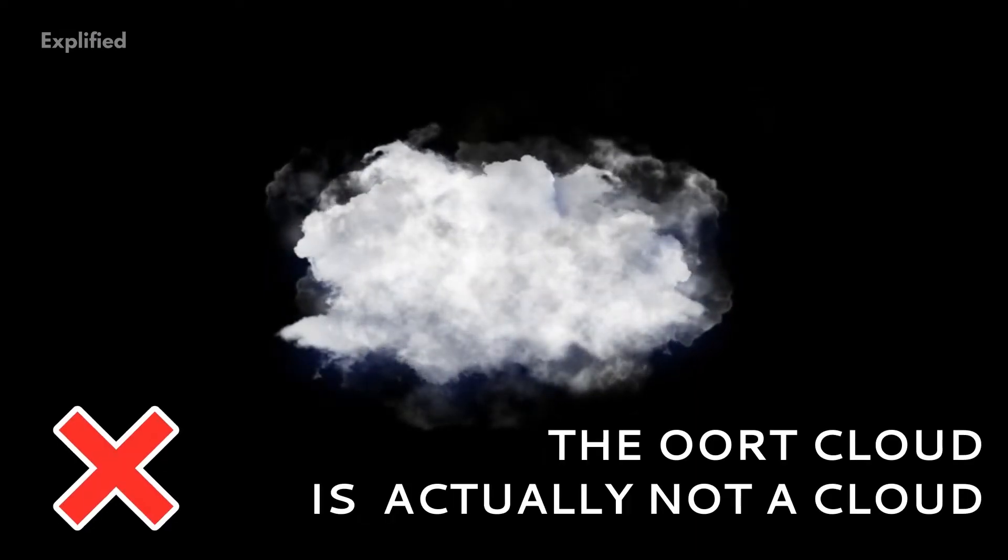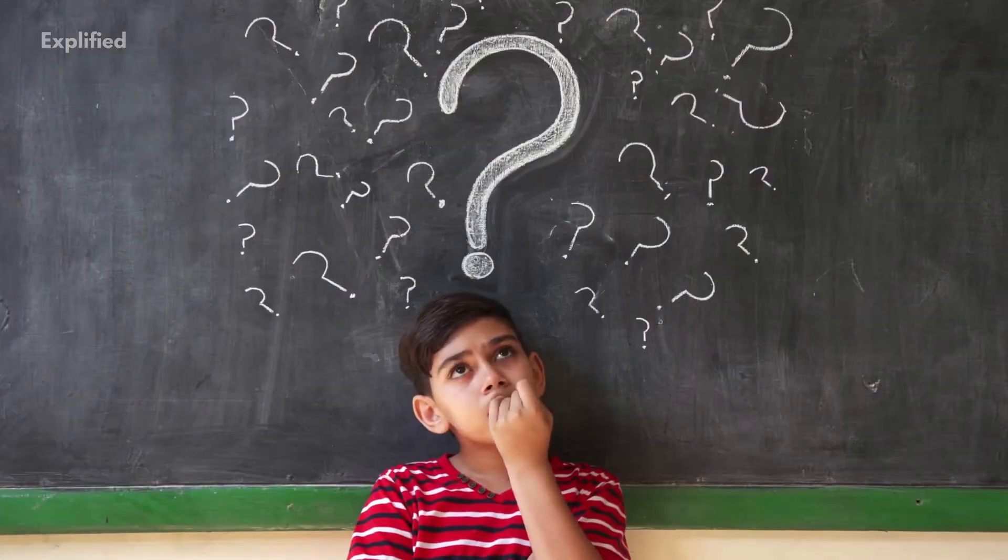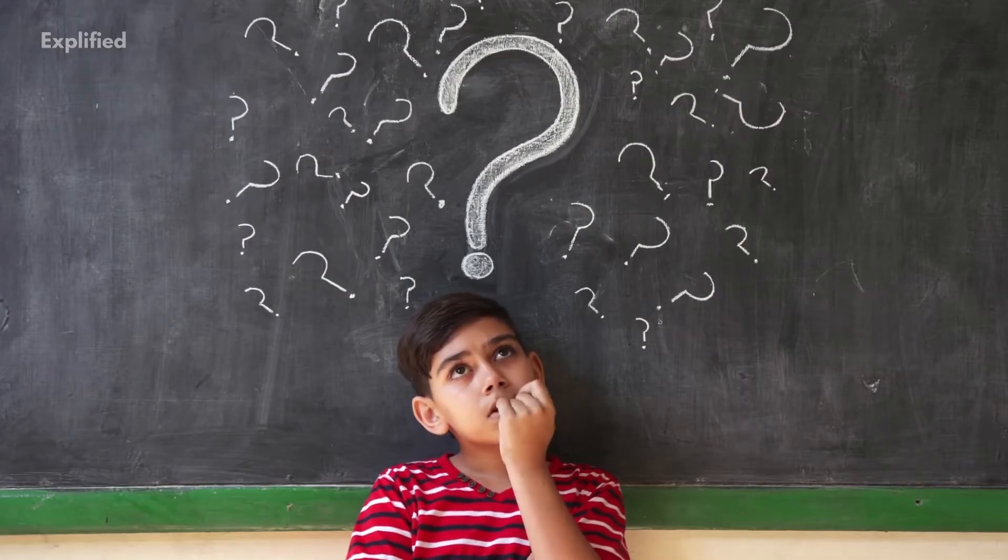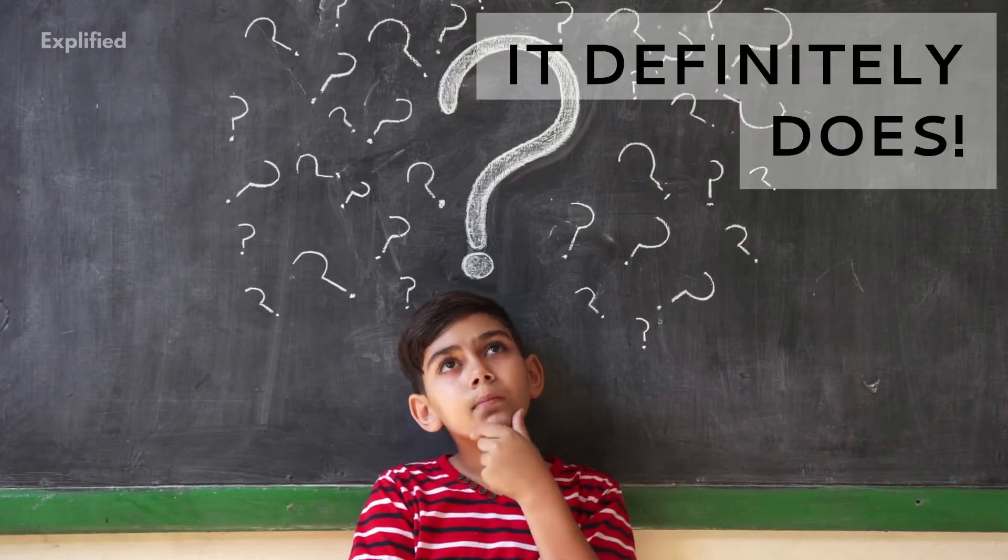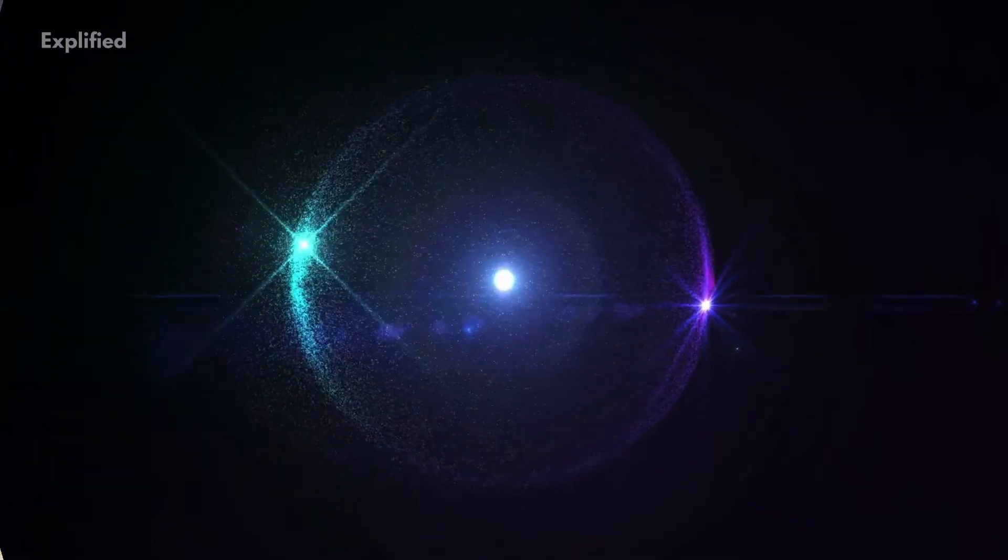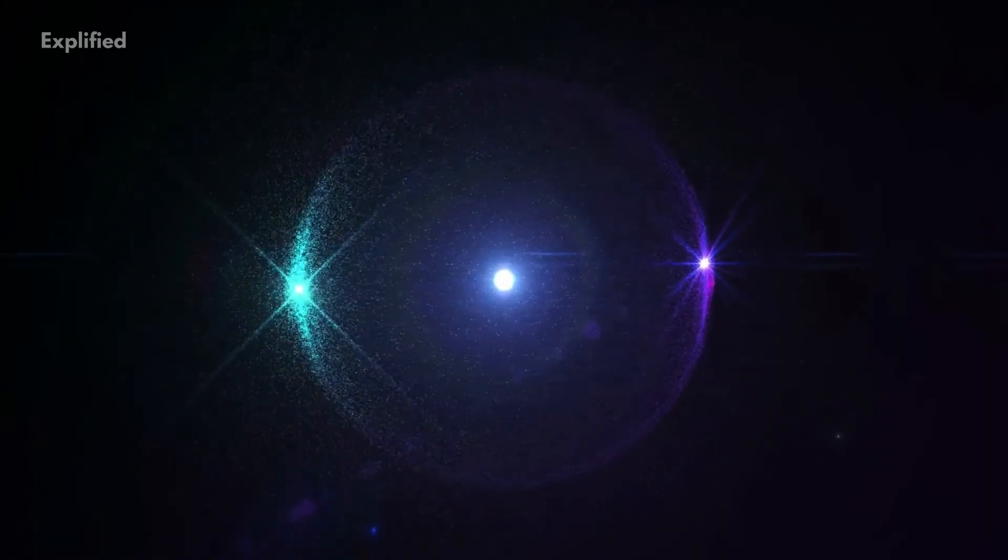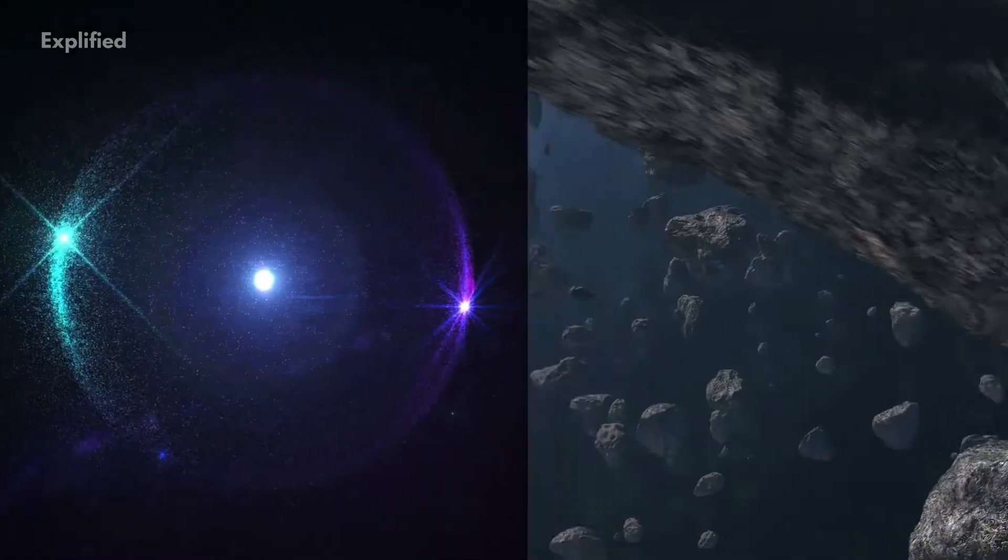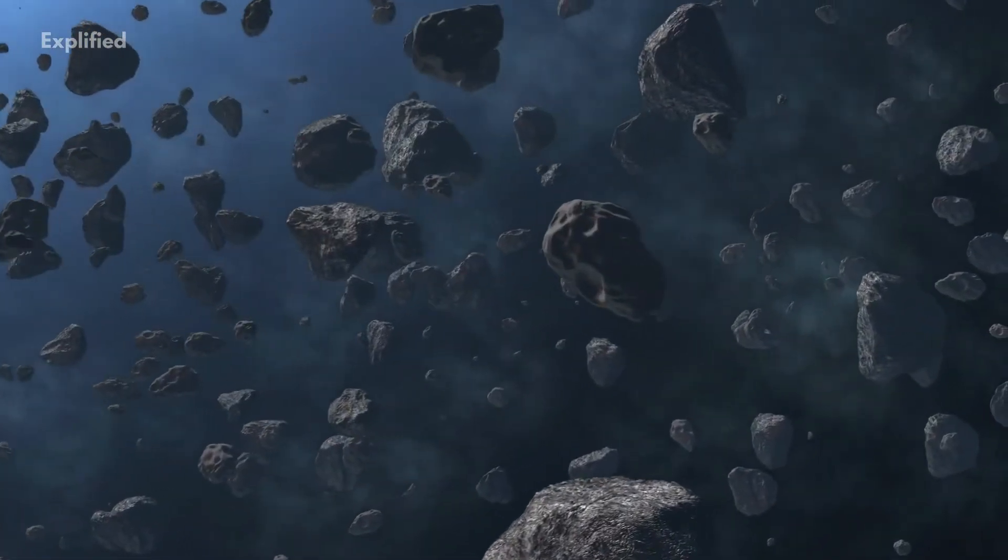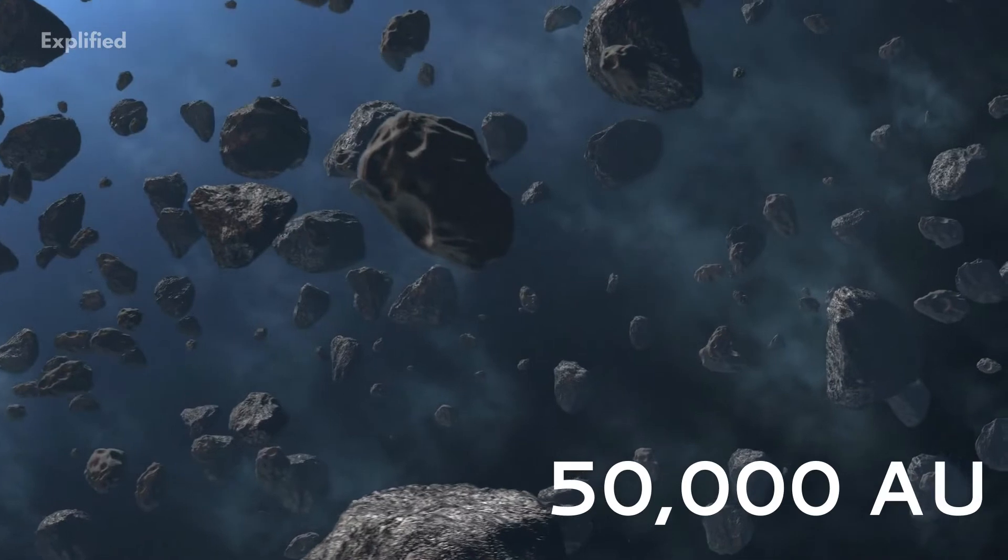Number 1. The Oort cloud is actually not a cloud. Does the name suggest that it is a cloud? It definitely does, to all of us. But you will be surprised to know that it is actually not a cloud, but just a spherical mass that consists of trillions of icy planetesimals, surrounding the Sun at a distance of 50,000 AU.